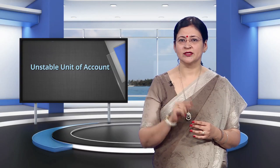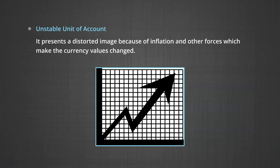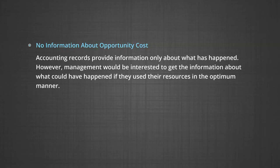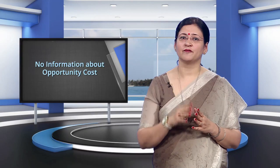The third limitation of accounting is unstable unit of account. Accountants have to measure all transactions in a single unit of account, which is usually the currency used in a particular country. When accountants show assets purchased in last year's value in rupees, it presents a distorted image because of inflation and other forces which make currency values change. The fourth limitation is no information about opportunity cost — accounting records provide information only about what has happened; however, management would be interested to know what could have happened if they used their resources in the optimum manner. The last important limitation is historical data — accounting information relates to past transactions only. These limitations must be kept in view while making use of accounting records and information.